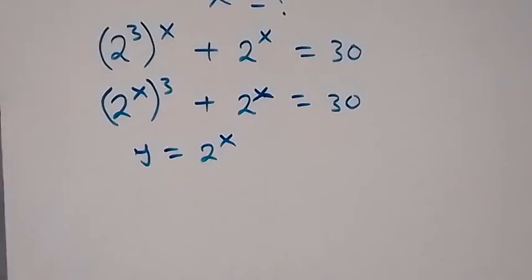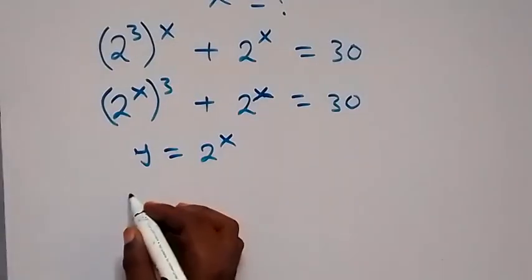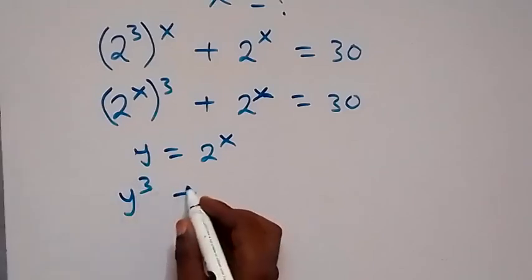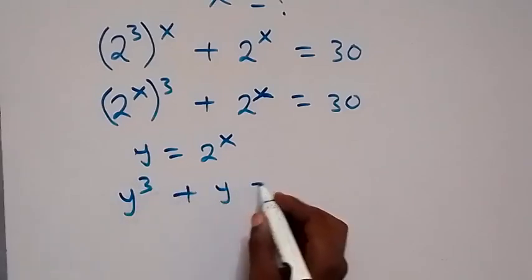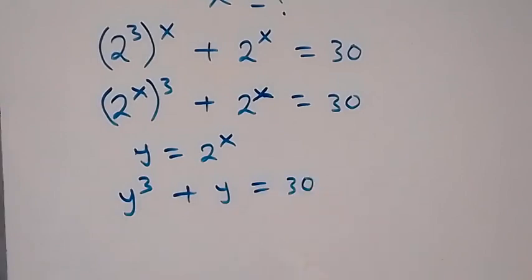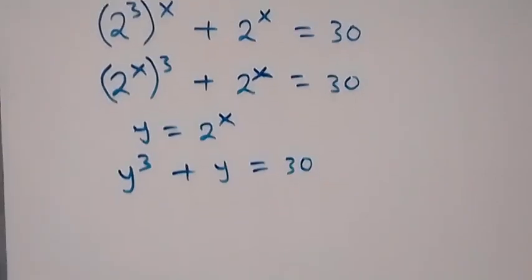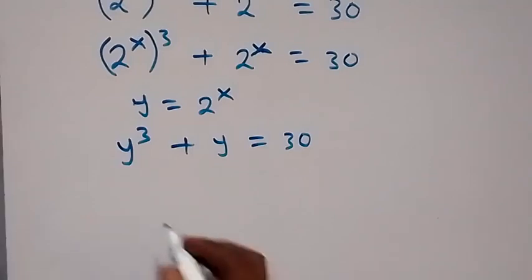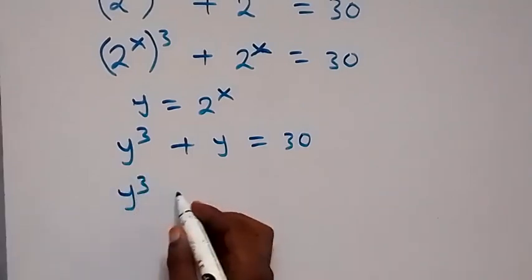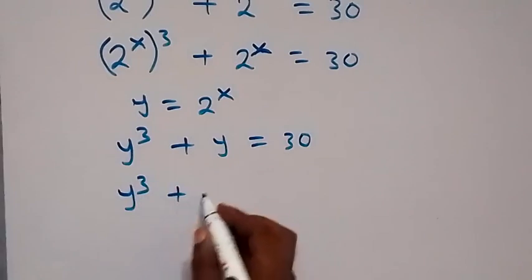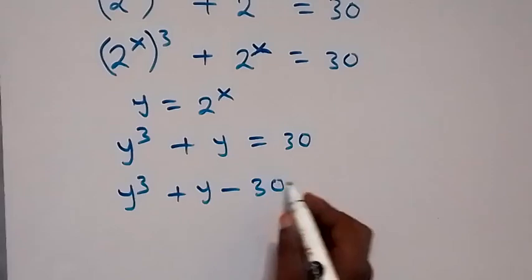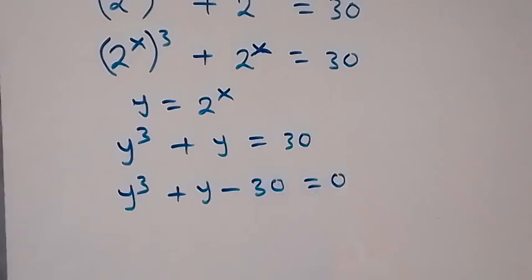In terms of y, this becomes y raised to power 3 plus y equals to 30. We can take 30 to this side to form an equation, and this becomes y raised to power 3 plus y minus 30 equals to 0.